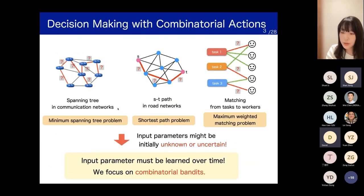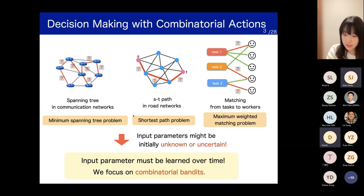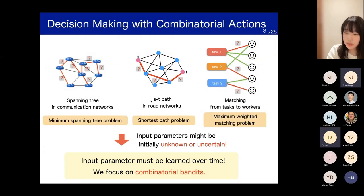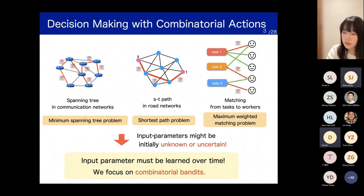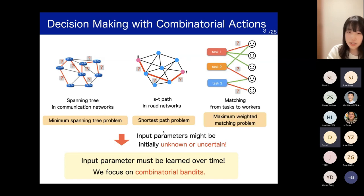We are interested in decision-making with combinatorial actions. Combinatorial optimization is one of the fundamental research fields that has been extremely studied in theoretical computer science and operations research. In such a classical framework for combinatorial optimization, it is commonly assumed that input parameters such as edge weight are exactly known. However, in recent applications, input parameters might be initially unknown or uncertain. Therefore, they must be learned over time based on the past information. So in this talk, we focus on combinatorial bandit programs to resolve such uncertainty.